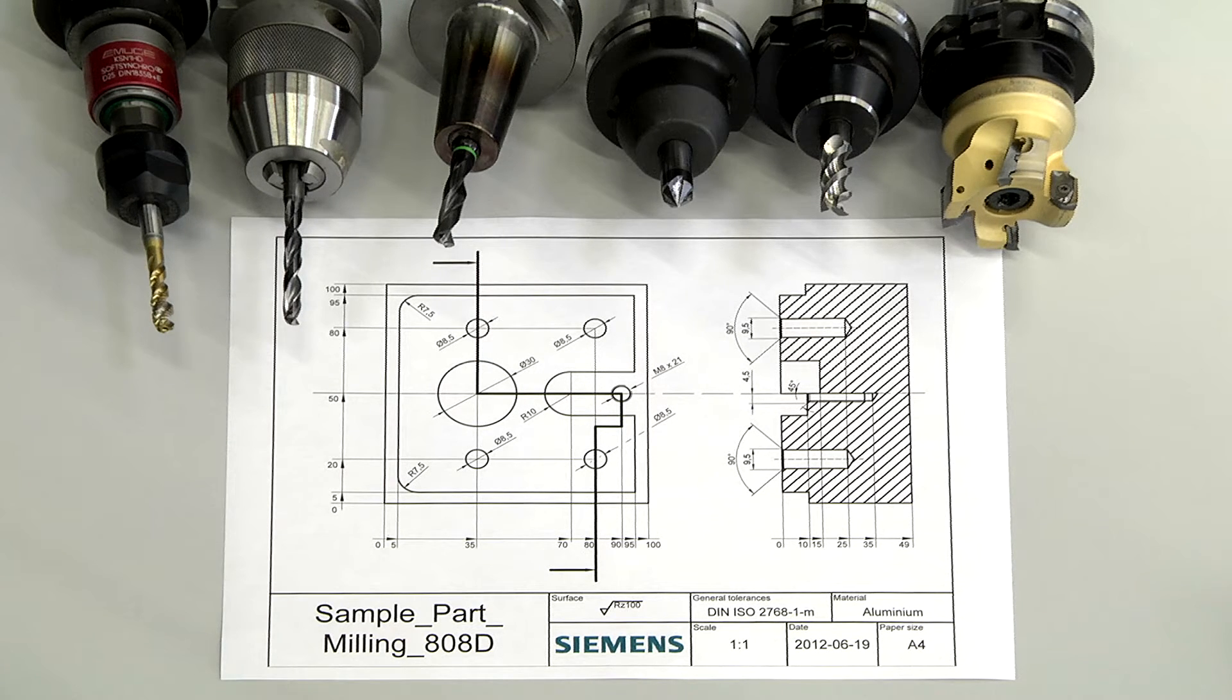These are the 6 tools we want to use. First the controller needs to know the tool and geometry data. All of them have to be measured.